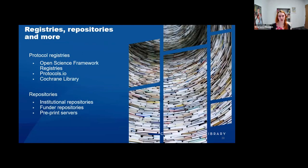There are several options for where to register your protocol, depending on whether there is a registry for your discipline, such as the Cochrane Library. There are also other protocol registries that are more discipline-specific. If there isn't one for your discipline, the Open Science Framework is your catch-all. Publishing your protocol in an institutional repository, a funder repository, or within preprint servers are also acceptable — the main point is that it is published before you begin forming the rest of your research.